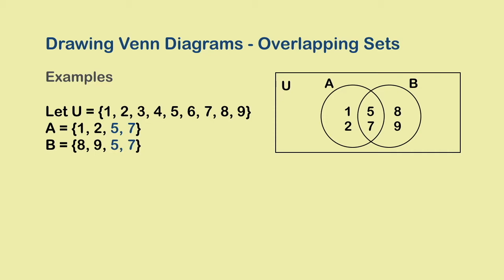Now we move to the outermost region. So far, the rectangle has already got 1, 2, 5, 7, 8 and 9. So what we need to add is 3, 4 and 6. And so we list these elements. This completes our Venn diagram.